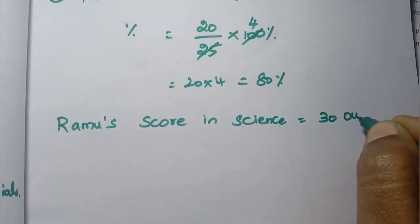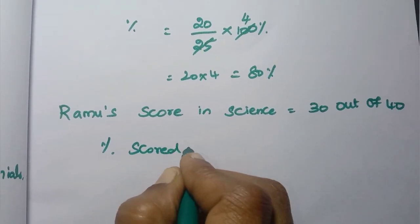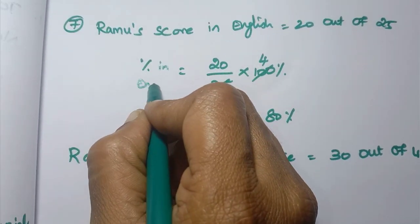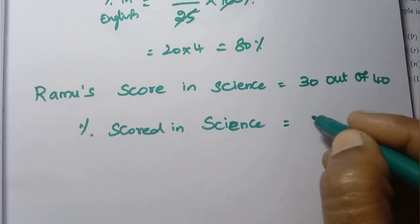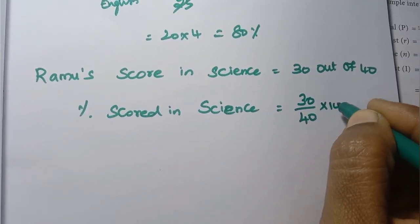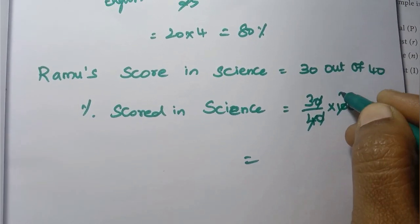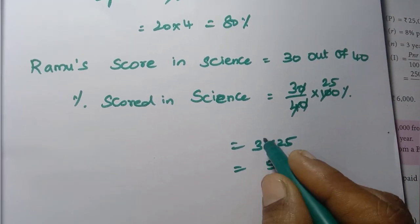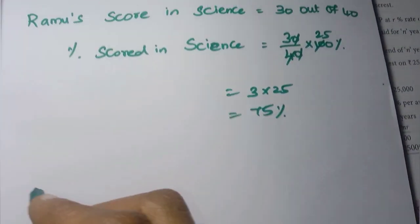Percentage scored in Science: 30 out of 40. So 30 into 100 divided by 40. Cancel zeros: 4 into 25 = 100; 3 into 25 = 75. So percentage scored in Science is 75%.